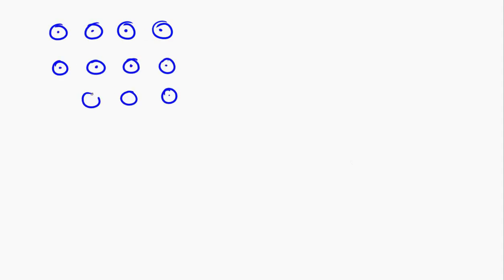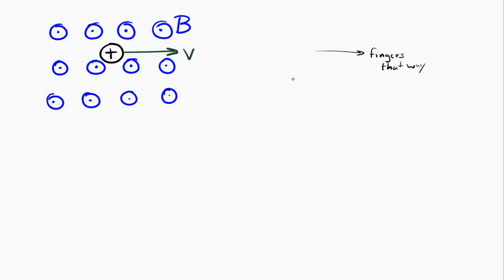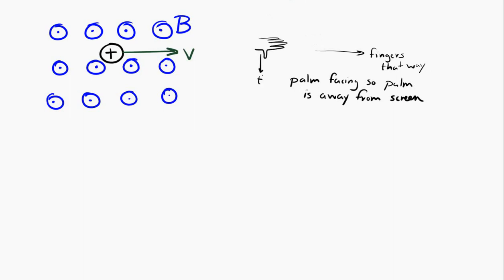Let's try an example. Let's say we have a magnetic field coming out of the page, and a positive charge that's moving to the right. To find the force on that charge using the right-hand rule: take your right hand, point your fingers in the direction of the velocity, then orient your palm so that the magnetic field is coming out of it. With your thumb sticking out, the force is in the direction your thumb points — in this case, toward the bottom of the page.